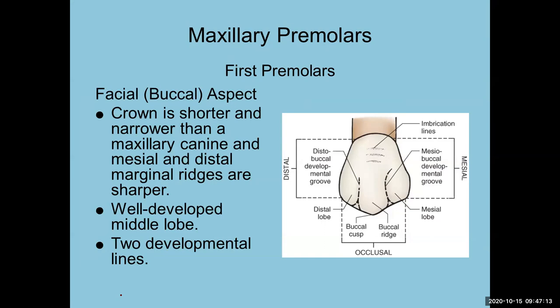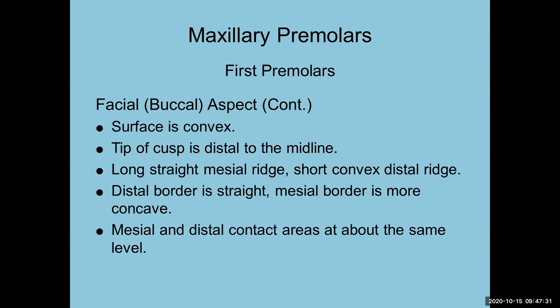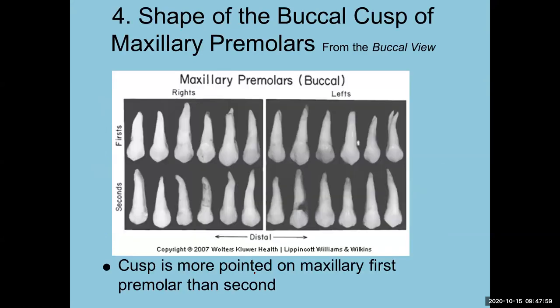Looking at the mesial view: there's a contact area, a depression visible here, and a root depression going all the way up the root. The crown for the first premolar is shorter and narrower than the maxillary canine but it looks like the canine. You have a well-developed middle lobe and sometimes little developmental grooves here. The surface is convex, the tip of the cusp is distal to the midline, with a long straight mesial ridge and a shorter distal ridge — very similar to the canine.